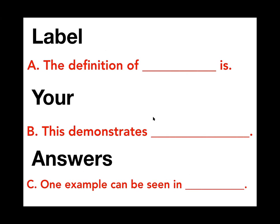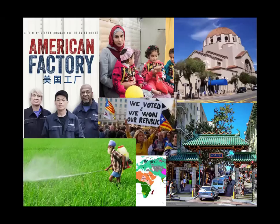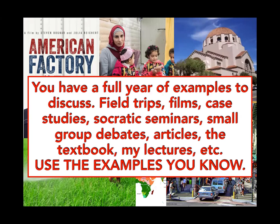What we've been doing all year is outlining our answers, and I'd recommend outlining here too. You can outline on paper and then type, or outline on a separate Google Doc — but do not submit your outline, only submit your answers. This year we've covered films, field trips, readings, debates, and Socratic seminars — so many examples. Use the examples you remember to demonstrate your points: field trips, films, case studies, Socratic seminars, small group debates, articles, textbook, lecture. Use examples you know on the AP exam.